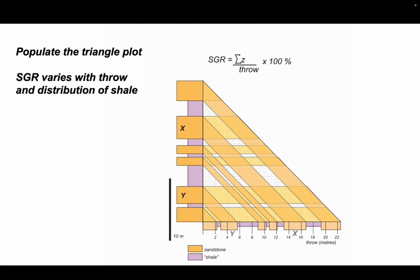So this is a really quick exercise. Of course, we could calculate the shale gouge ratio for the remainder of the triangle plot to show how the SGR varies with throw and shale distribution for this faulted succession. A really quick worked example of the application of the triangle plot and the shale gouge ratio to examine fault seal.